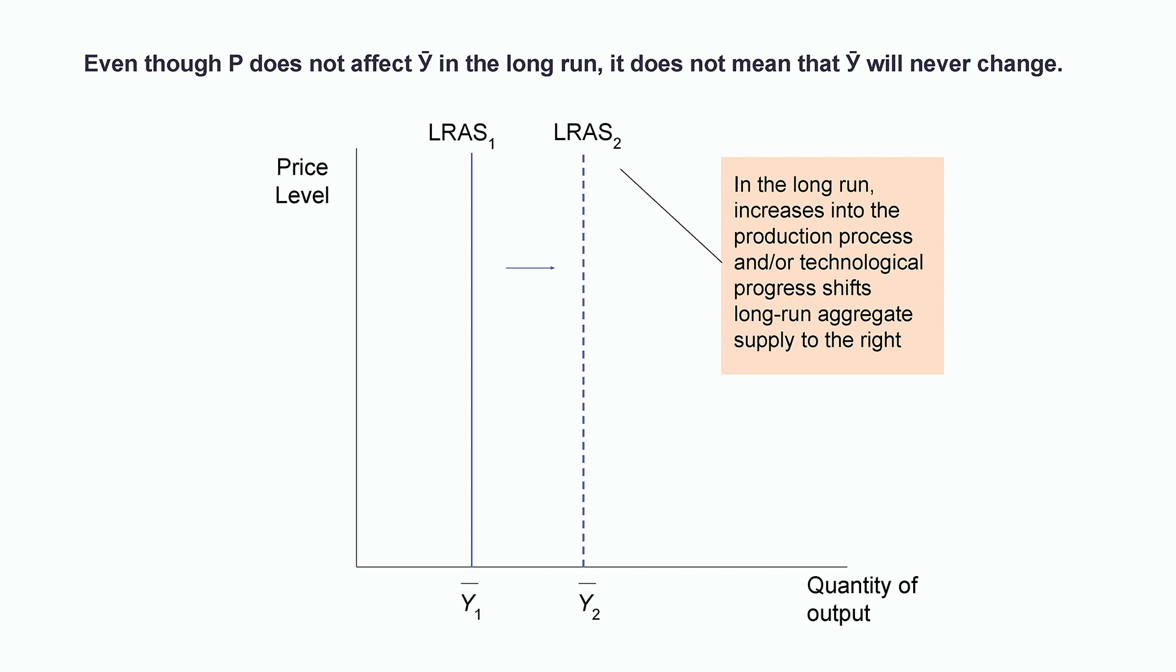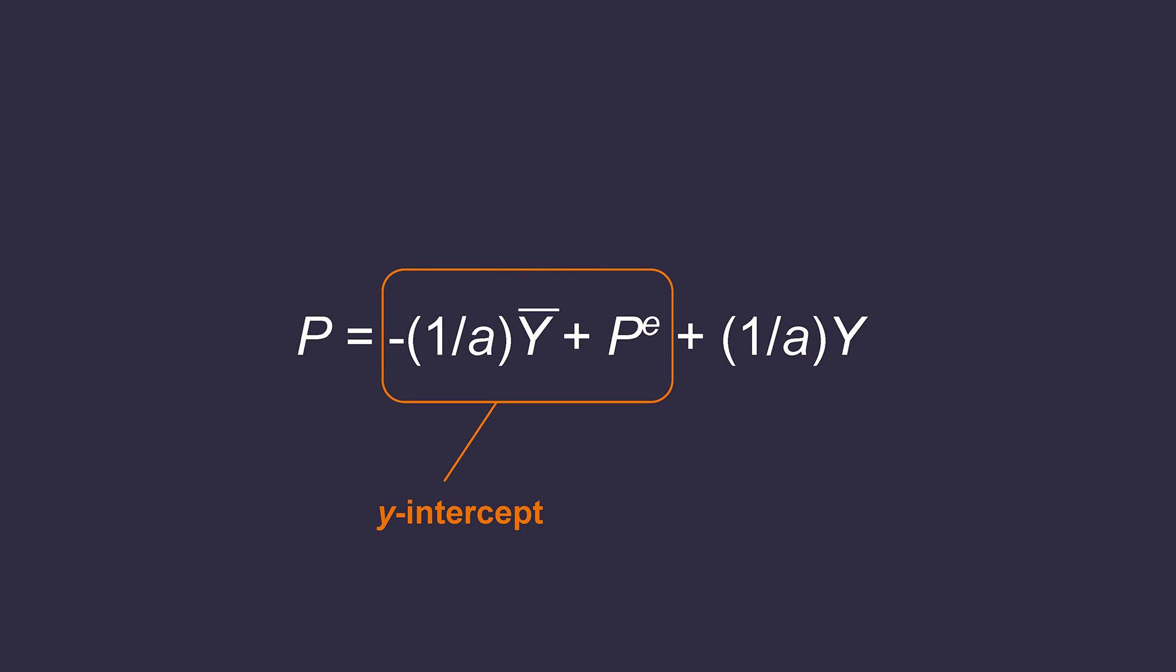If Y bar increases, what happens to our LRAS? It will shift to the right, of course. A rightward shift in long run aggregate supply reflects economic growth. Does economic growth only impact long run aggregate supply? Of course not.